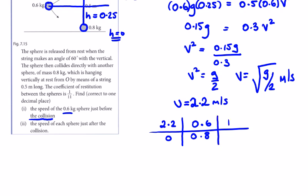We call the speeds after p and q. Using our equations, (p - q) / (2.2 - 0) equals -e. Here's e in the question: e = -1/11.